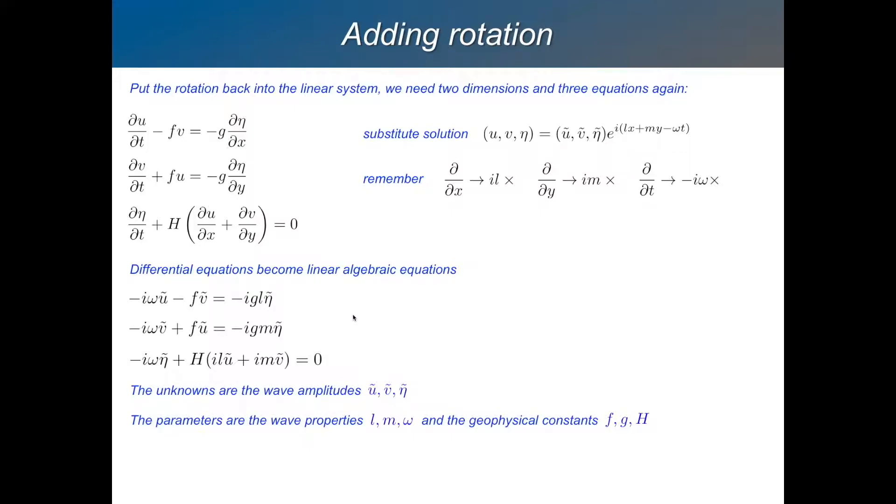And what else is there in there? There's basically three types of things in there. There's the coefficients of the amplitudes. There's the properties of the wave. So the frequencies and the wave numbers. And there are some geophysical parameters which are constants like F or H, or G, right?